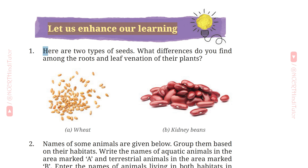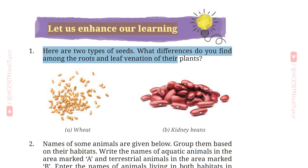Question 1. Here are two types of seeds. What differences do you find among the roots and leaf venation of their plants? A. Wheat, B. Kidney beans.